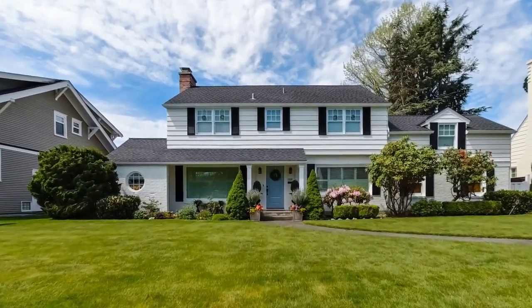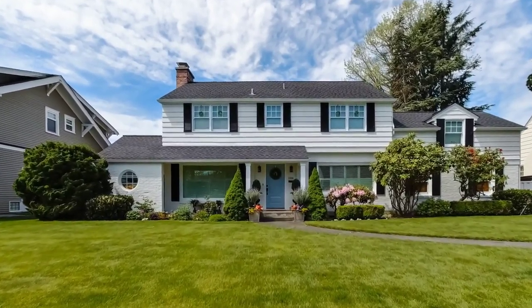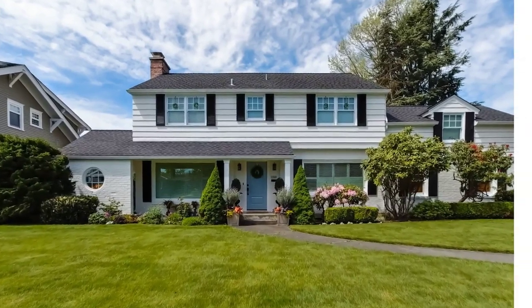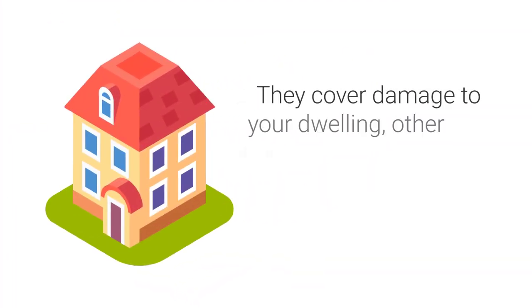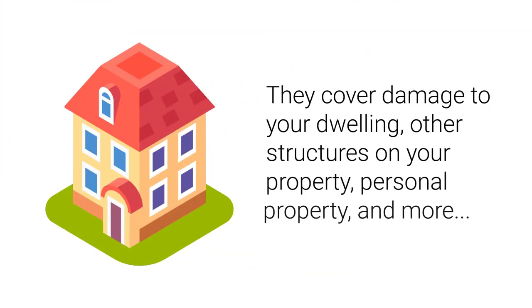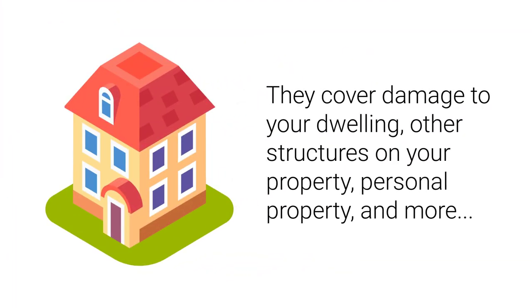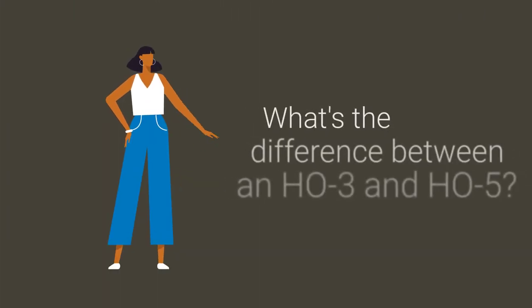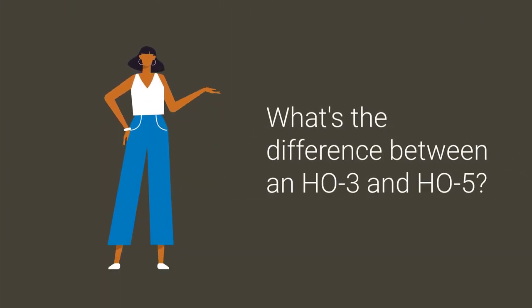H03 and H05 are common types of homeowners policies. They cover damage to your dwelling, other structures on your property, personal property, and more. But what is the difference between an H03 and H05?